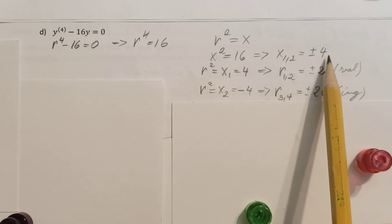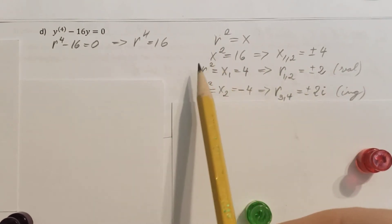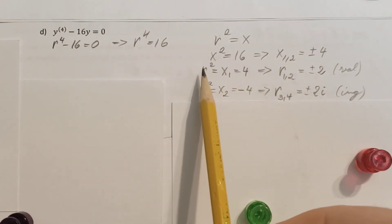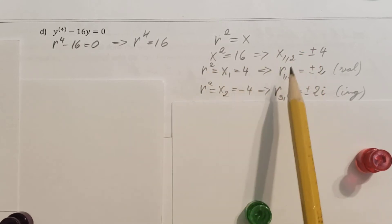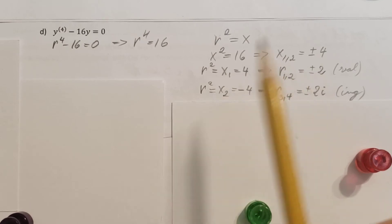And from here, I can go ahead and solve for my original, the r, when the first one is gonna be r squared equals x1, which is 4. So my r1 and 2 is plus minus 2, which is a real number.